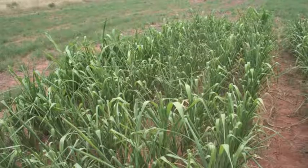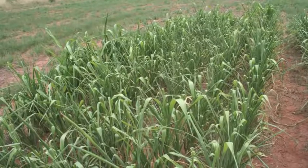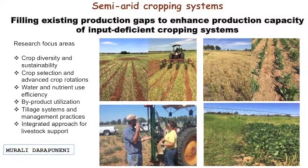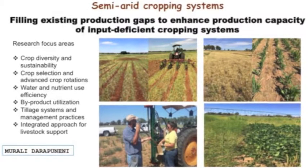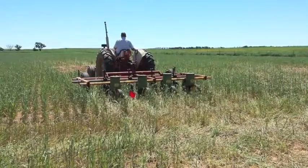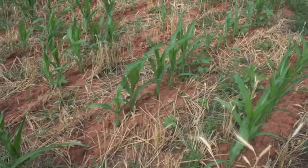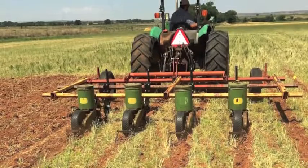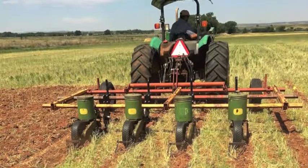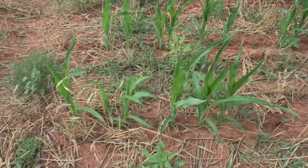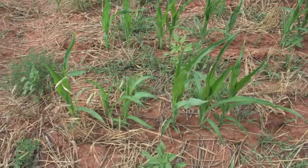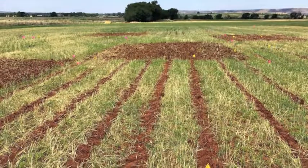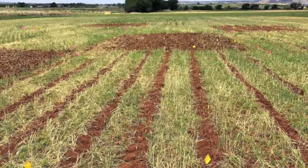We are looking at alternate cropping systems, cover crop water use and water use efficiency. I am also looking at manure application in the strip-till system, where rather than applying to the whole area, manure can be applied only to the strip-till area around the seed zone, saving 60% on manure.